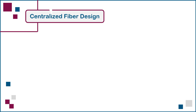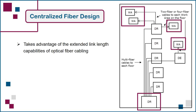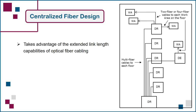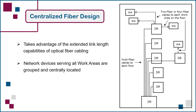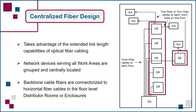Let's begin with a look at the Centralized Fiber Design option. The Centralized Fiber Design layout takes advantage of the extended link length capabilities of optical fiber cabling to eliminate the need for network equipment between the distributor room serving the building and every user work area, as shown here. In this design, the network devices serving all work areas in the building are grouped and centrally located in the building's distributor room, shown here on the ground floor. The distributor rooms or distributor enclosures on each floor are then used to splice or connectorize the fibers in the backbone cables to the two fiber or four fiber horizontal cables routed to the individual work area equipment outlets on the floor.